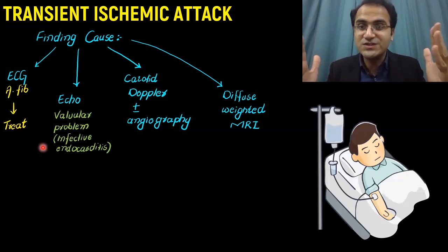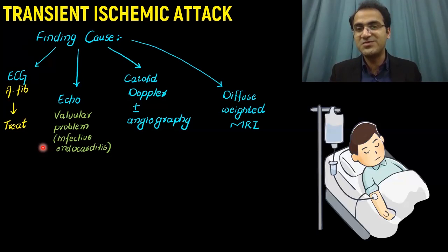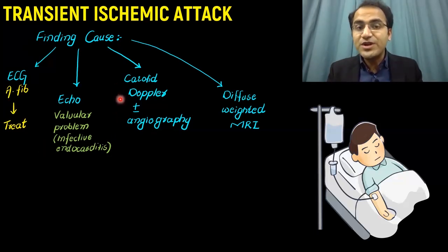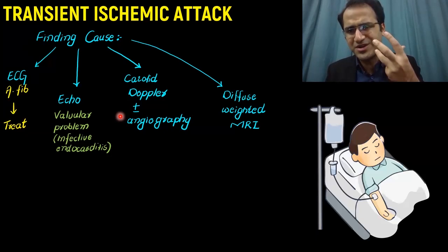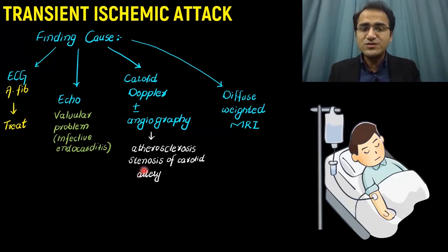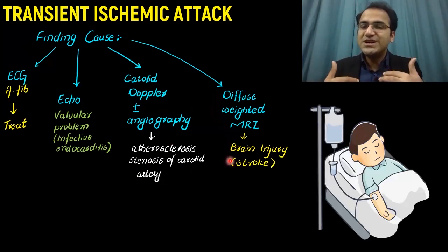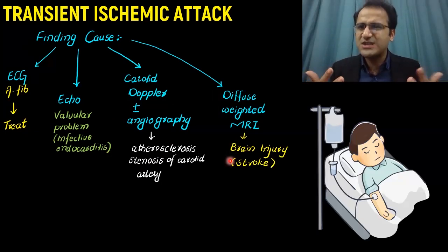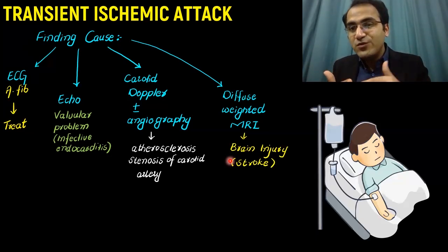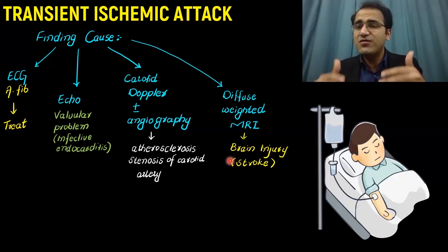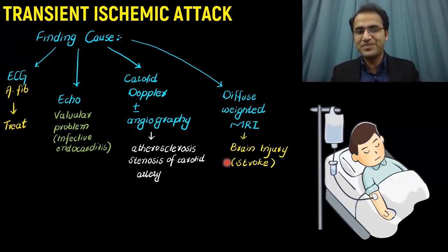We are on a hunt for causes — what caused this transient ischemic attack, because now it was reversible, just a TIA, but next time it will be a stroke. On carotid doppler with angiography and carotid ultrasound, we are looking for atherosclerosis in the carotid artery and how much it is blocked. Diffusion-weighted MRI is used to look for brain injury. CT scan without contrast is done first in the emergency department to quickly rule out bleeds. If the patient has TIA, the MRI will be normal.